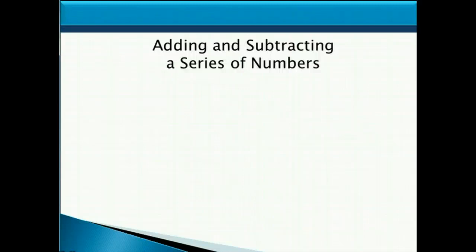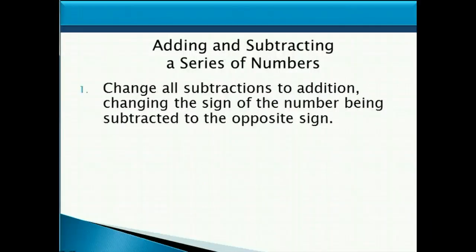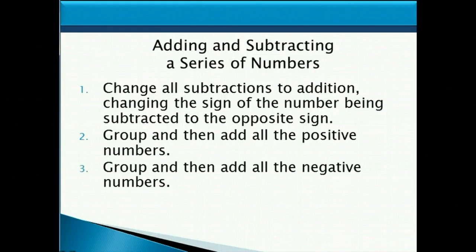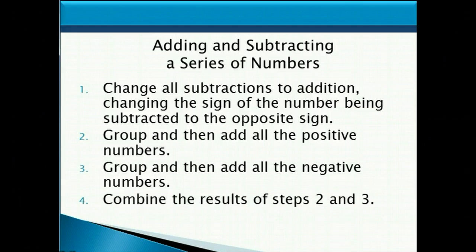Now let's look at how we add and subtract a series of numbers. First we change all the subtractions to addition, changing the sign of the number being subtracted to the opposite sign — these two steps are extremely important to do first before anything else. Then you can group and add all the positive numbers together, do the same thing with all the negative numbers, and then take those two results and add them together.